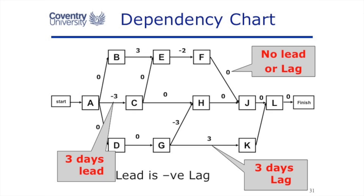In lecture three, we looked at dependency charts. And this is how we display lead and lag on the dependency charts. We don't normally put a zero in. We just leave it blank and there's no lead or lag. If there is a lag, a delay between tasks, we put a positive number. If there is a lead, we have a negative number.